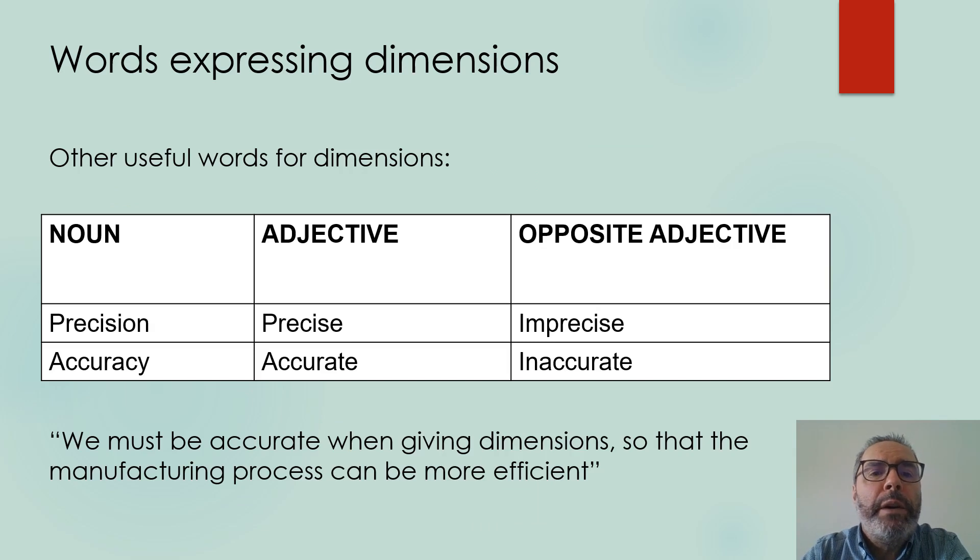Other useful words for dimensions are on this table. Precision and accuracy, with the corresponding adjectives precise and accurate, and the opposite adjective imprecise or inaccurate. For example, we must be accurate when giving dimensions so that the manufacturing process can be more efficient.